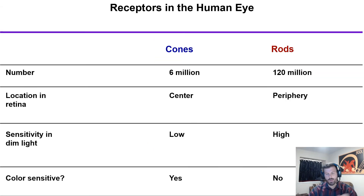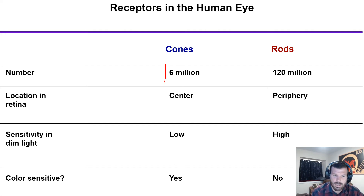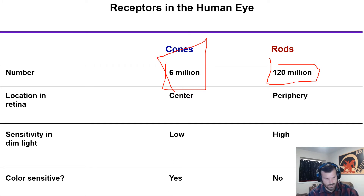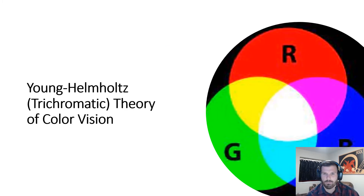We have about 6 million cones per eye and 120 million rods — so way more rods than cones. That's just a number to keep in mind.